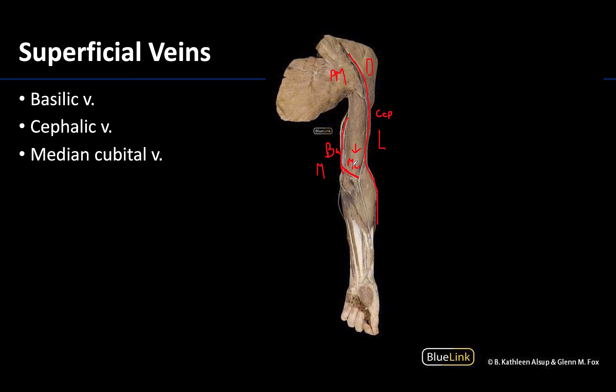That will wrap us up regarding the superficial veins of the upper limb. Note that there will be other veins in this region — particularly if you're doing a dissection, you will see quite a bit, usually around the forearm region — but they're highly variable, so we're going to focus on the most typically present ones for identification. Thank you for your time and attention, and I hope you have a great rest of your day.